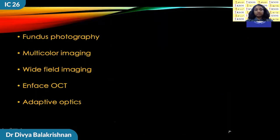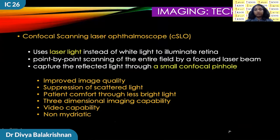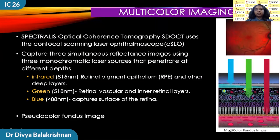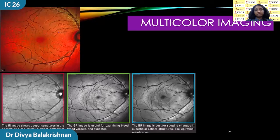Imaging techniques have evolved with time, and confocal scanning laser ophthalmoscope is one of the techniques being widely used in recent imaging systems. It uses laser light instead of white light to illuminate the fundus, point by point scanning of the entire field by a focused laser beam, and captures the reflected light through a small confocal pinhole. Multicolor imaging is one option available with the Spectralis. It uses three different laser beams to create a pseudocolor image of the fundus. The IR reflectance image shows deeper structures in the choroid and RPE, the green reflectance image is useful for examining blood vessels and exudates, and the blue reflectance image is best for spotting changes in superficial vitreous structures like epiretinal membrane.